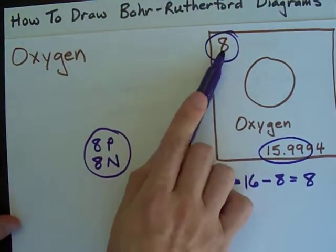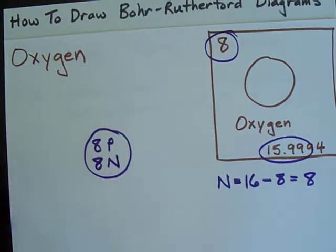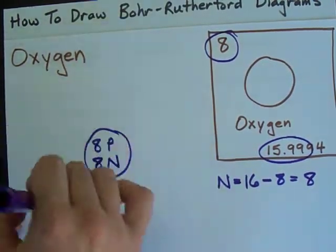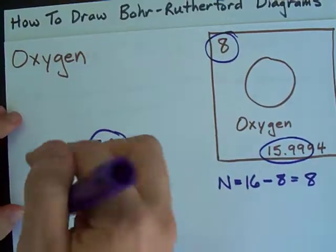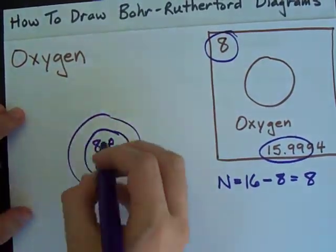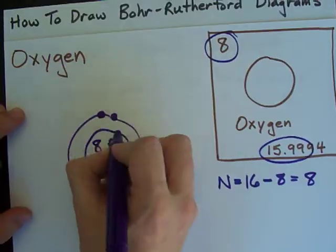Now, you need 8 electrons around the edge of it, or in the shells around the nucleus, I should say. You're allowed up to 2 in this first shell. 1, 2.